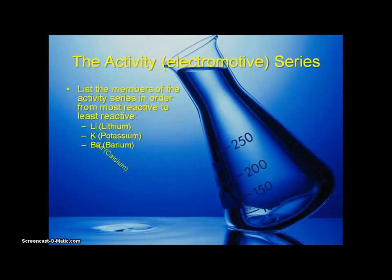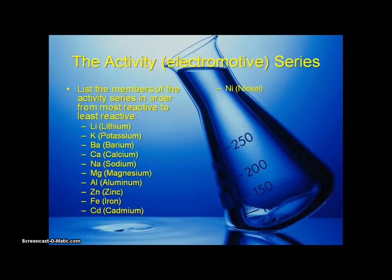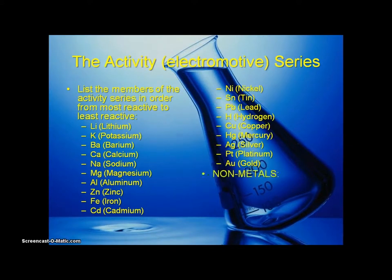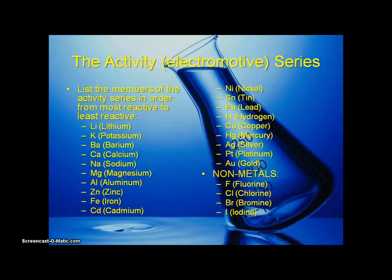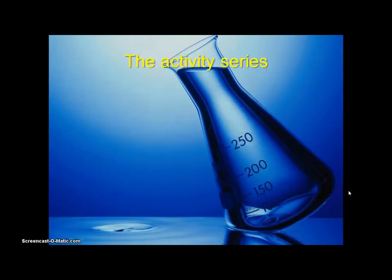Here are the elements in the electromotive series — you might want to copy these down in order. The first group are metals, where hydrogen is kind of a quasi-metal but not really. The non-metals are in a separate category with their own electromotive series: fluorine, chlorine, bromine, and iodine.